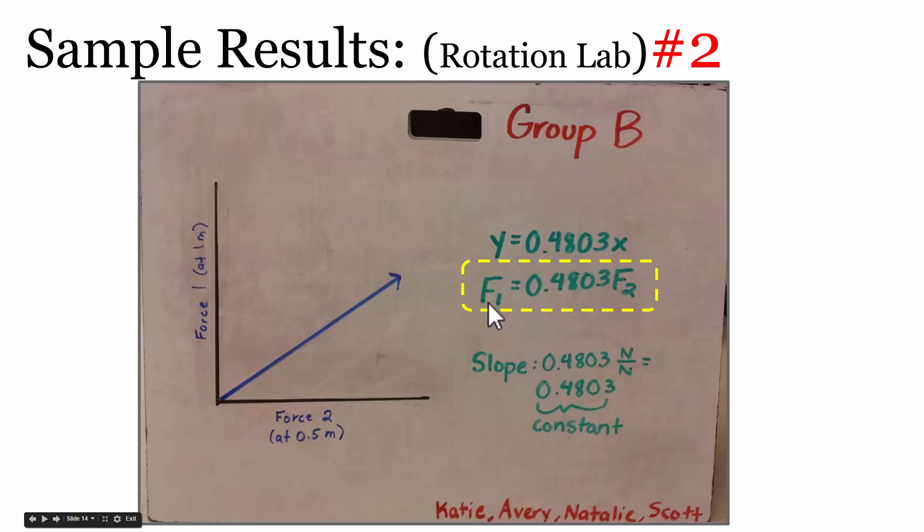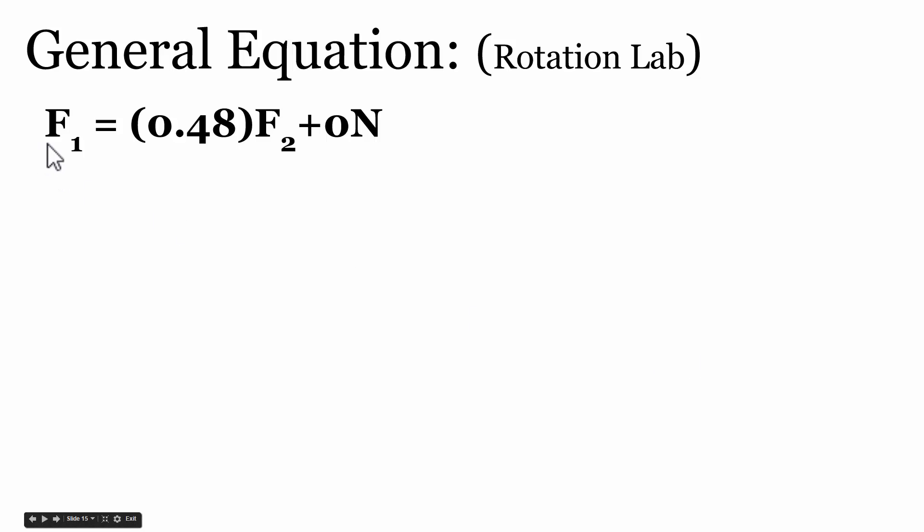Let's look at this data and see if we can generalize the results. We get force 1, which is the force at a meter, is equal to 0.48 times force 2. Remember, the units were newtons per newton, but a newton divided by a newton simplifies to 1 over 1, or it's essentially this value is unitless. So that slope times the applied force, or F2, plus the y-intercept.